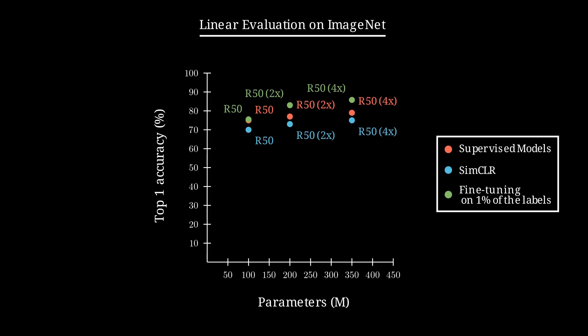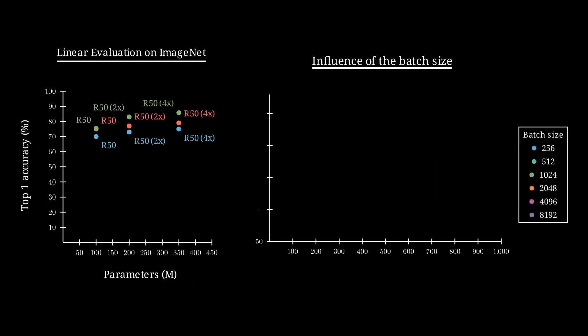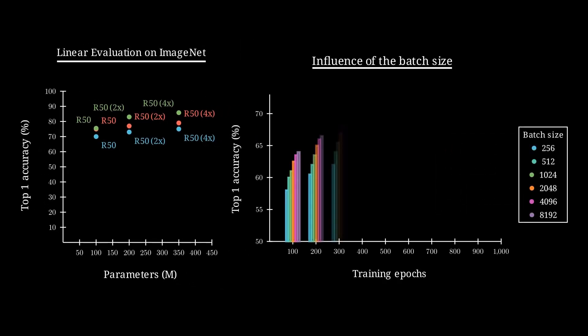As we saw previously, a key factor behind SimCLR's success is its use of large batch sizes. Bigger batches provide more negative examples which are crucial for learning strong representations.